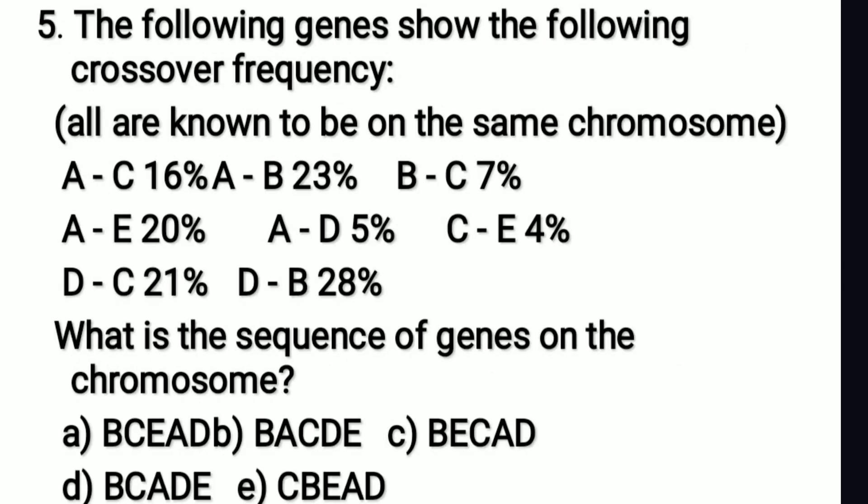The following genes show these crossover frequencies: A-C 16%, A-B 23%, B-C 7%, A-E 20%, A-D 5%, C-E 4%, D-C 21%, D-B 28%. What is the sequence of genes on the chromosome?